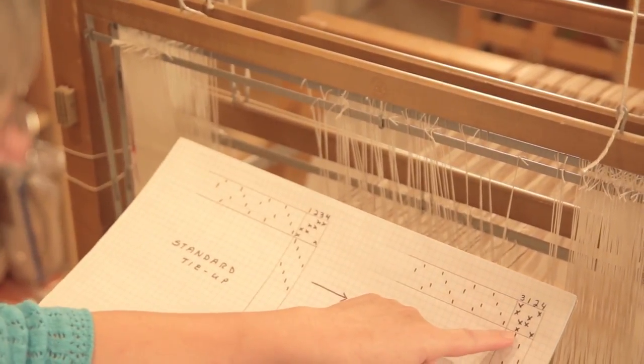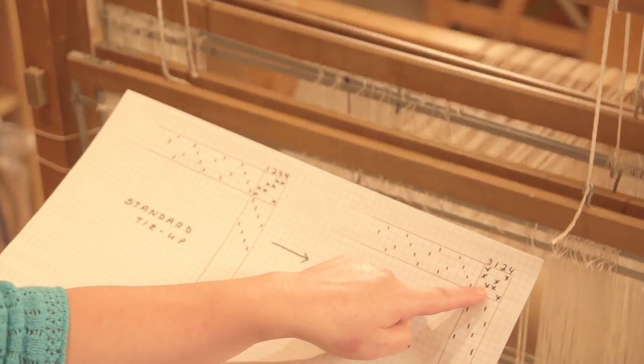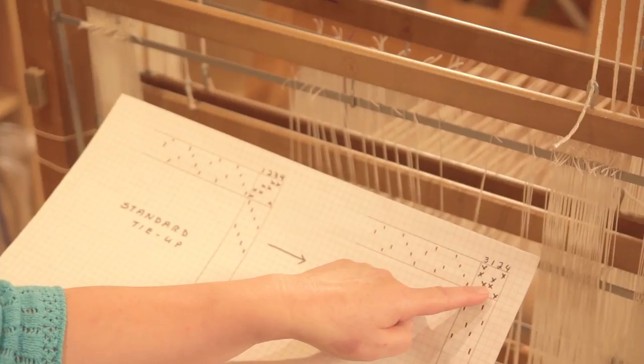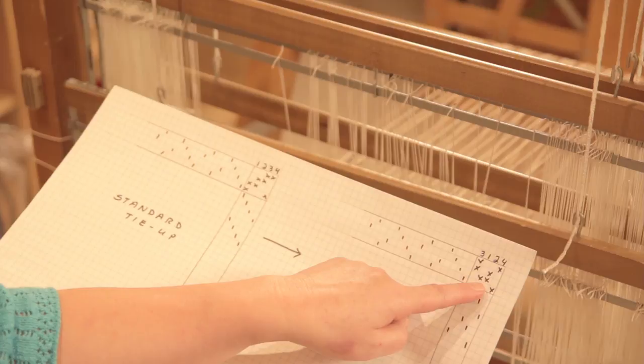If I step on the second treadle from my left, you will see one and two going down. If I step on treadle three from my left, two and three go down and the last treadle, one and four go down.